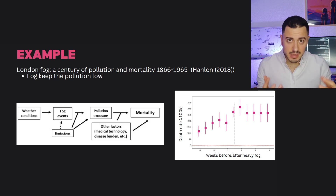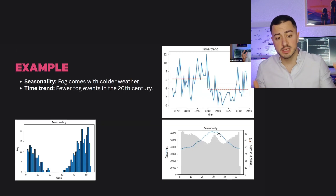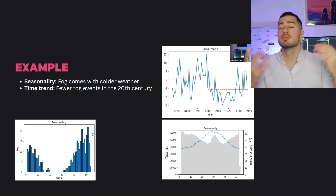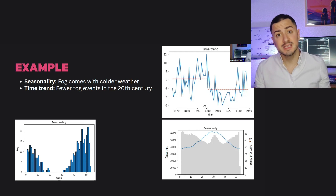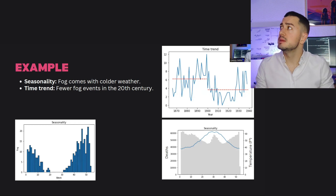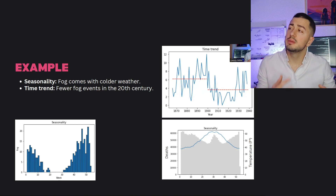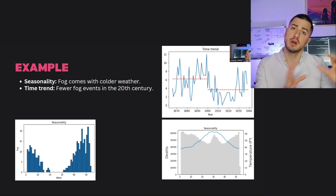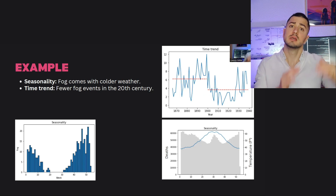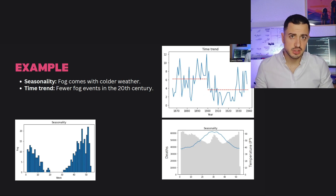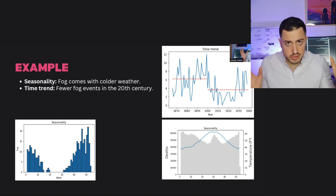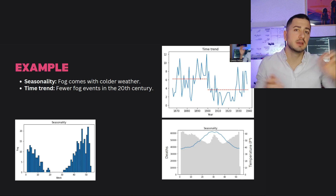But many things still might be affecting this effect. We can see there is a very strong seasonality, meaning that basically you have a higher probability to experience heavy fog during winter. Also, it correlates through time, meaning that in the 1900s you have fewer weeks with heavy fog. But at the same time, maybe during winter when it's more foggy, people get sick more easily because it's cold. In the 1900s, when you have fewer weeks with heavy fog, you also have better medical systems, so it might reduce the risk of dying. You have many things affecting this relationship. The idea of the researcher is to build a model where you include all those elements to try to disentangle this effect.